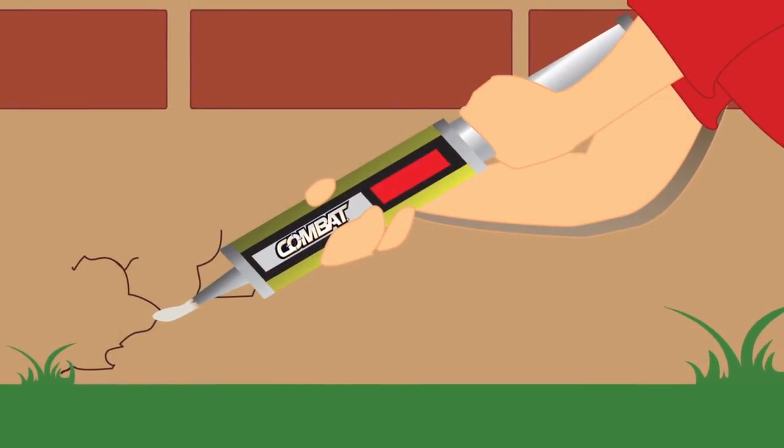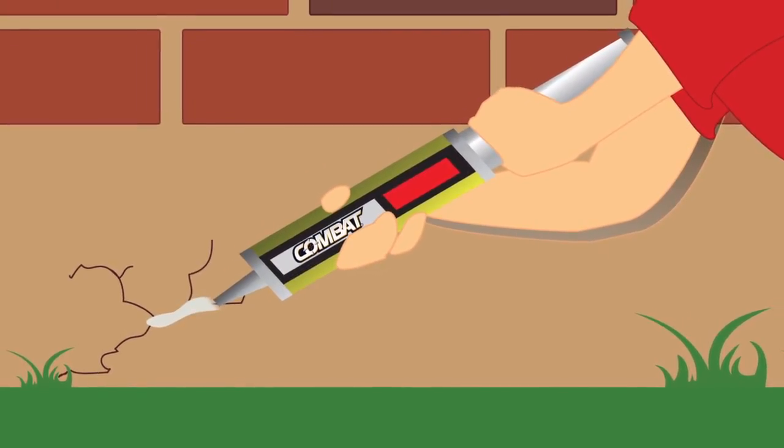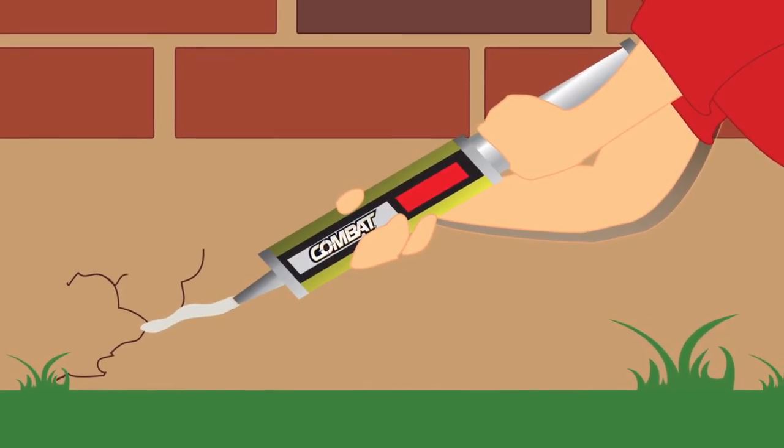Use Combat gel for hard-to-reach areas, as well as in cracks and crevices where ants and roaches may be entering the house.